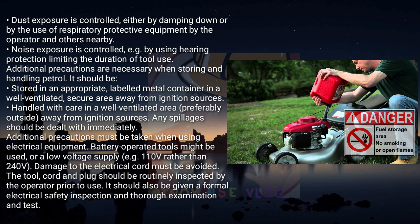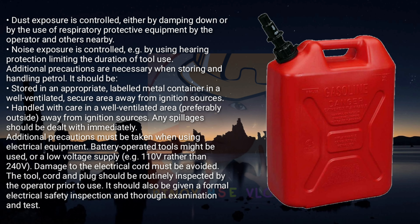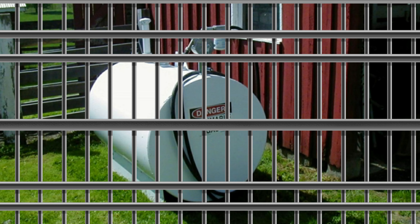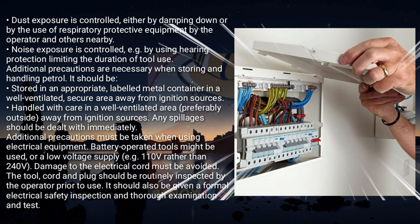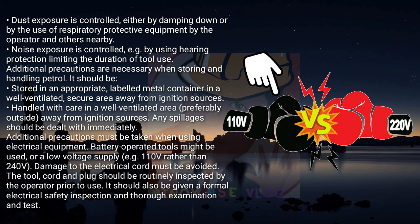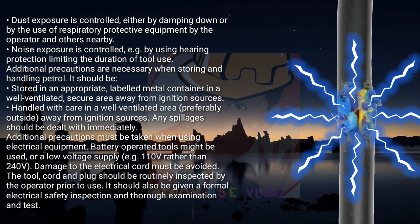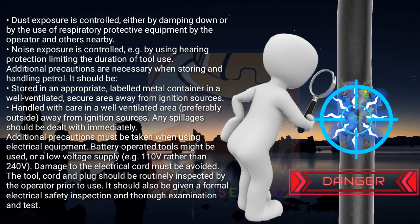Additional precautions are necessary when storing and handling petrol: it should be stored in a labelled metal container in a well-ventilated, secure area away from ignition sources, and any spillages should be dealt with immediately. Additional precautions must be taken when using electrical equipment: battery-operated tools might be used, or a low-voltage supply – for example, 110 volts rather than 240 volts. Damage to the electrical cord must be avoided. The tool, cord, and plug should be routinely inspected by the operator prior to use, and should also be given a formal electrical safety inspection, thorough examination, and test.